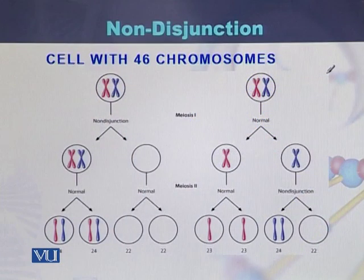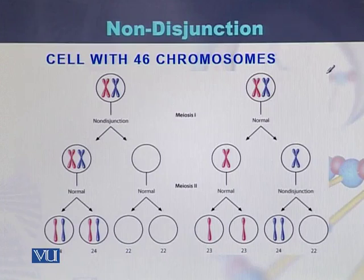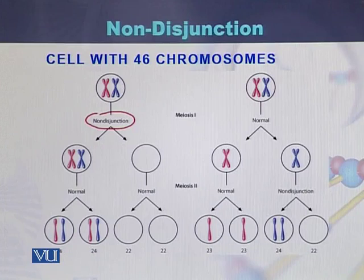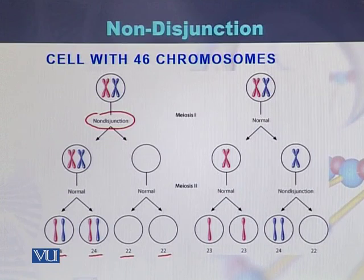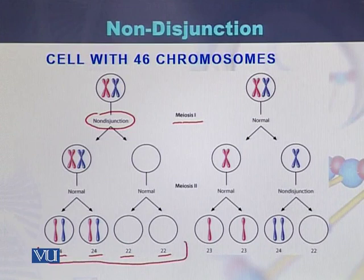Looking at this diagram to understand non-disjunction versus normal disjunction: consider a cell with 46 chromosomes. If there is non-disjunction, one of the cells will have both chromosomes while the other cell will be lacking chromosomes. As a result of the second meiosis, cells will be produced with 24 chromosomes and others with 22 chromosomes. Normally meiosis should produce cells with 23 chromosomes. If non-disjunction is during meiosis 1, all cells produced will have an abnormal number of chromosomes.